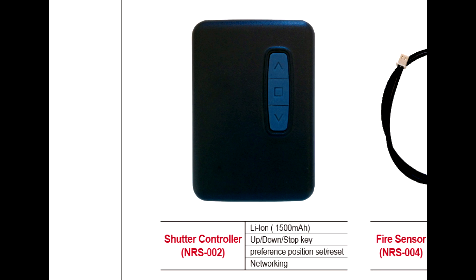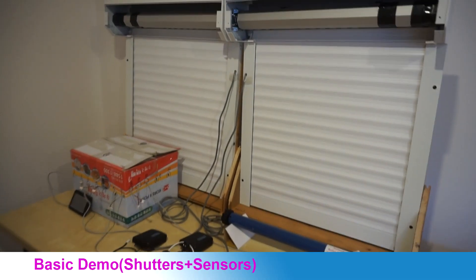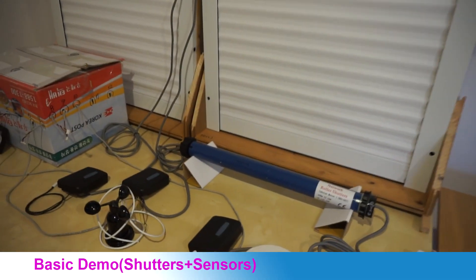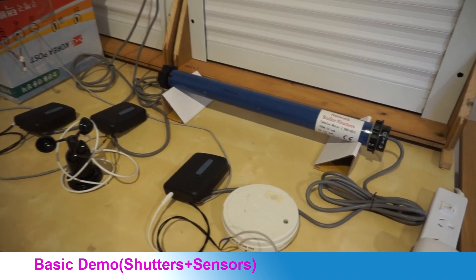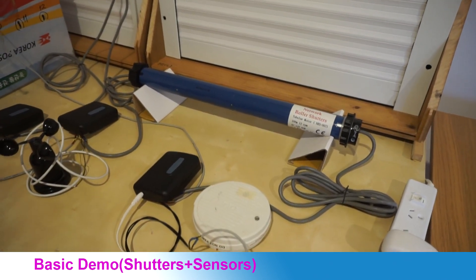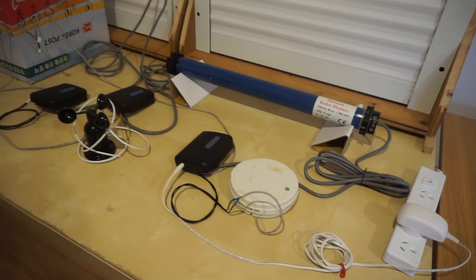This controller can be applied to rolling shutter as well as rolling awning, rolling blind, and rolling curtain easily. Let's start with the basic demonstration. In this demonstration, three controllers are used: two are connected to the shutters, and one is connected to a motor.